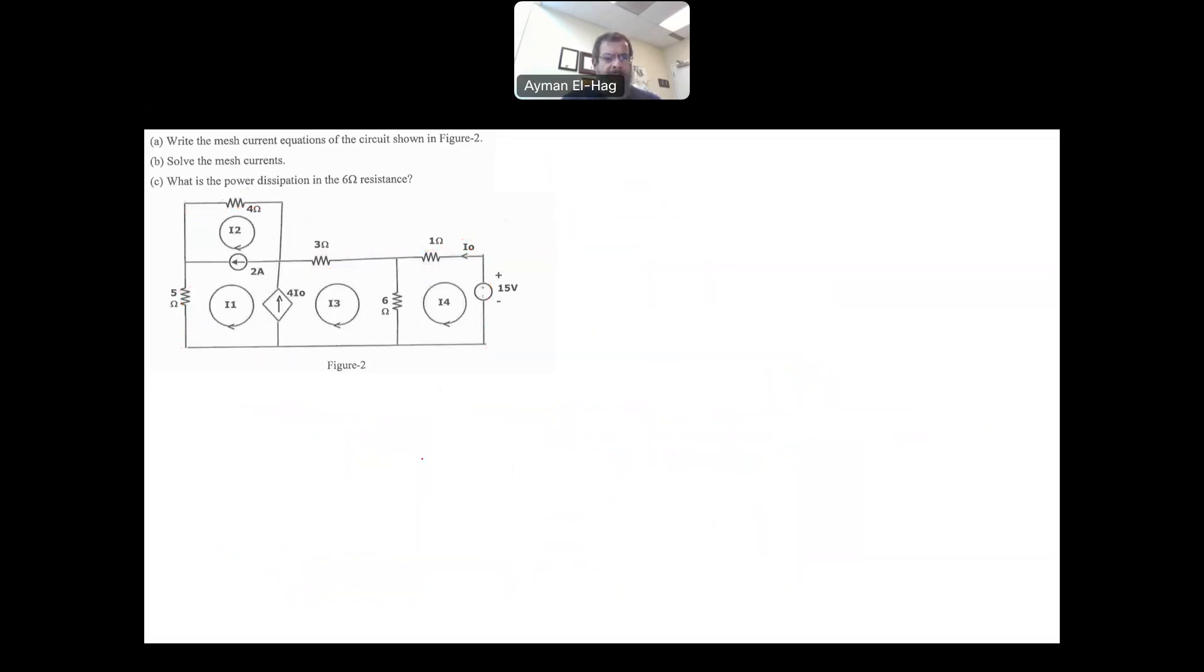Now if you solve this equation, you will find that I1 is equal to minus 2.8693 amps, I2 is equal to minus 0.8693 amps, I3 is equal to 1.2876 amps, and finally I4 is equal to minus 1.0392 amps. Now just as a check to see if your answer is correct, this is one check only. We know that I2 minus I1 is equal to 2 amps. This is our first equation. And you see here, this is minus 0.8693 minus minus 2.8693, so it is equal to 2 amps. This is an indication that your answer is correct.